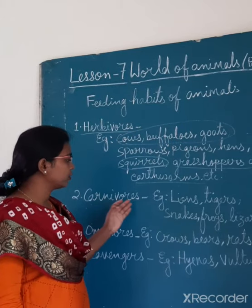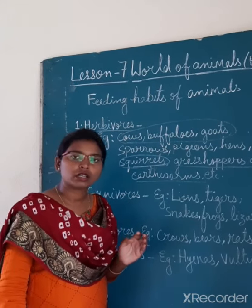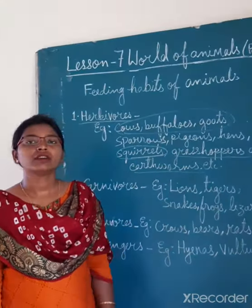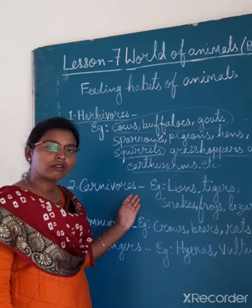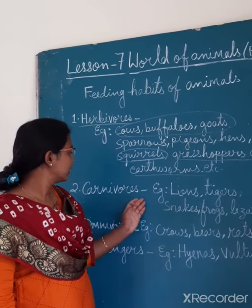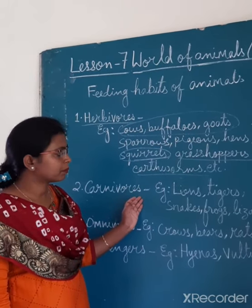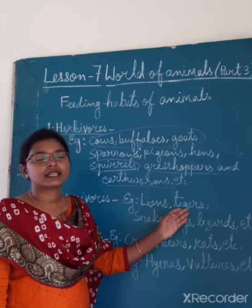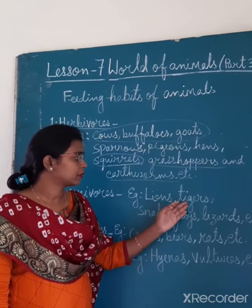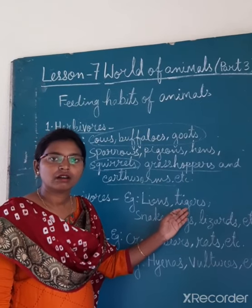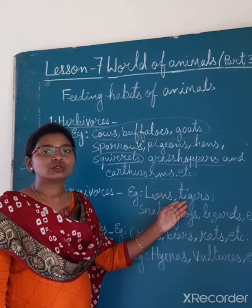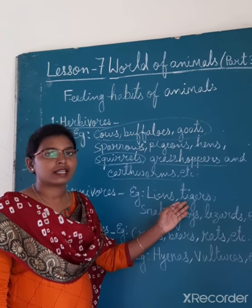Second, carnivores. What are carnivores animals? Carnivores animals are those animals who eat the flesh of other animals. Examples for carnivores: lions and tigers. Lions and tigers have soft teeth to tear the flesh, and they also have broad teeth to chew the bones and the flesh.